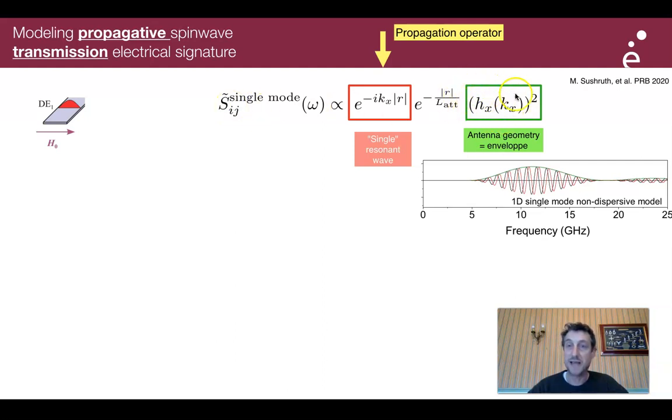The transmission parameter, when there is a single spin wave branch that contributes to the signal, is the product of three functions. The two most important are this antenna efficiency function that depends on the geometry of the antenna and defines the envelope in frequency or wave vector space in which it's possible to excite spin waves, and another propagative term, a phase term.